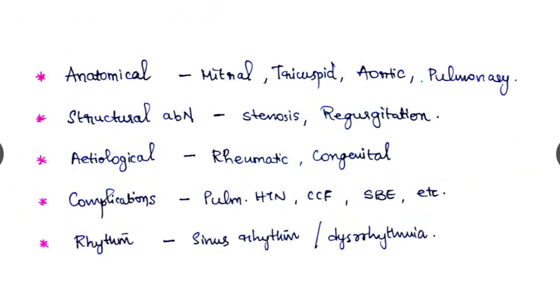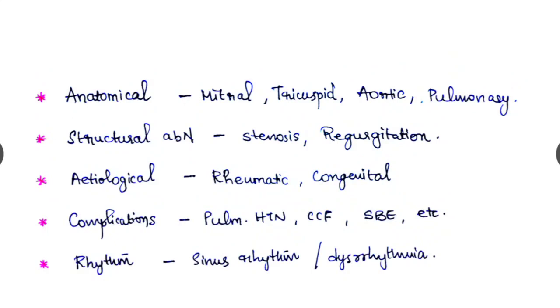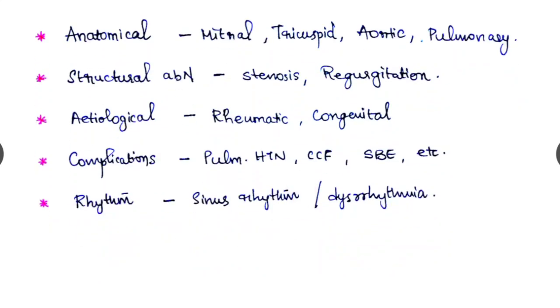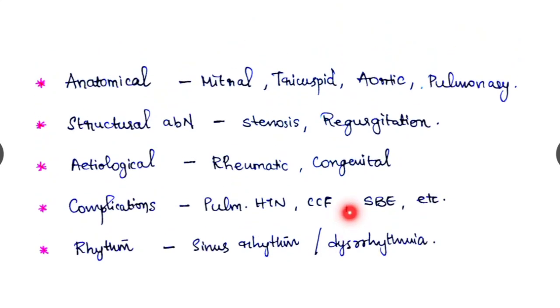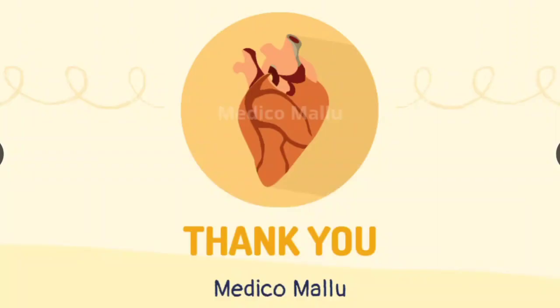The reporting or the summary should include the anatomical location of the lesion, that is mitral, tricuspid, aortic, or pulmonary. The structural abnormality, that is whether it is stenosis or regurgitation. The etiological cause: rheumatic or congenital. The complications like pulmonary hypertension, congestive cardiac failure, or subacute bacterial endocarditis. If it is present, we have to write it down. And lastly, the rhythm: patient is in sinus rhythm or in dysrhythmia. And the summary should include all this.